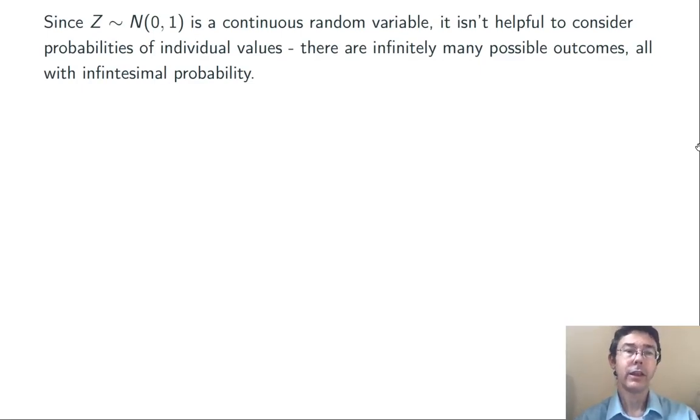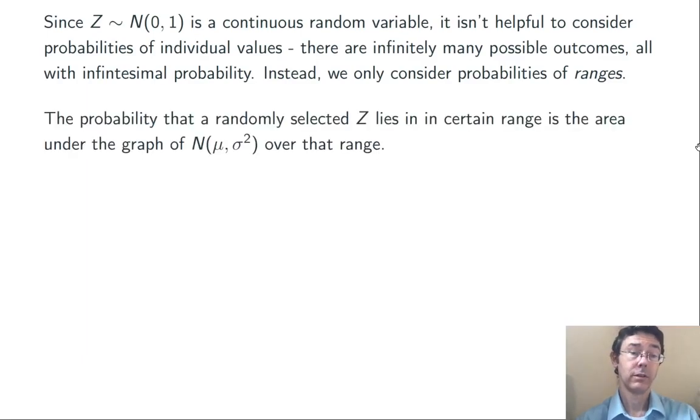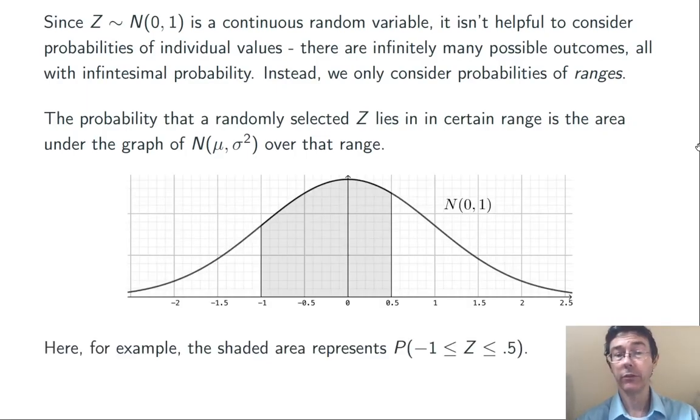If z has a standard normal distribution, it's not going to be helpful to ask about probabilities of individual values. There are infinitely many of those. Remember, we're on a continuum from negative infinity to positive infinity, and all of those individual values are going to have essentially zero probability. Instead, we only talk about probabilities that z falls in specific ranges. The way that we consider probabilities in a standard normal distribution is the same as the way we consider probabilities for any continuous probability distribution. We look at areas under the graph over the range that we're interested in.